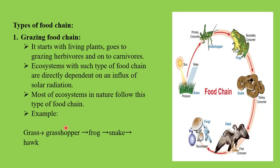Here is an example of the grazing type of food chain. It starts with the grass, the next is the frog, then the snake, and completely last is the hawk. This is an example of the grazing type of food chain.